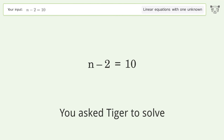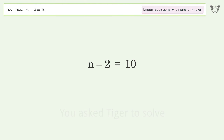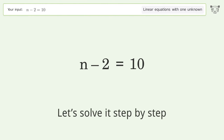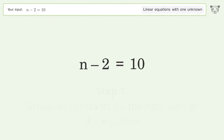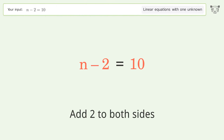Tiger was asked to solve a problem dealing with linear equations with one unknown. The final result is n equals 12. Let's solve it step by step: group all constants on the right side of the equation, then add 2 to both sides.